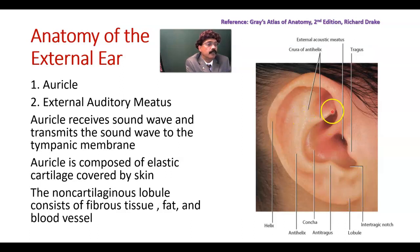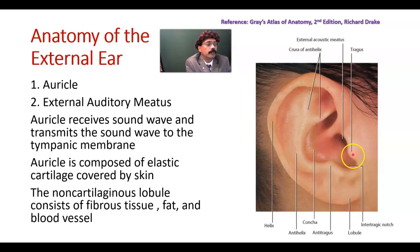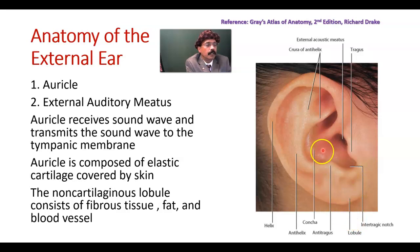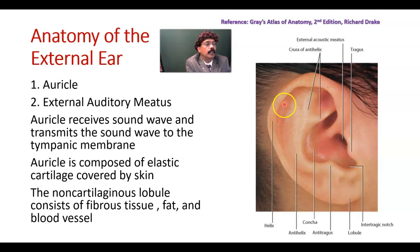If you look at the external ear, it is an irregular shape and varies from person to person in size. We have the tragus, the anti-tragus, intertragic notches here, and this is the lobule without any cartilage. This part is the concha. Then this is the helix, this is the anti-helix, and these are the crura of the anti-helix. We have some fossa here and here.